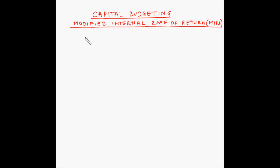Welcome to another video on capital budgeting. In order to overcome the shortcomings of the IRR, or internal rate of return method, a new method known as the modified internal rate of return, or MIRR, was devised to evaluate projects for inclusion in the capital budget.